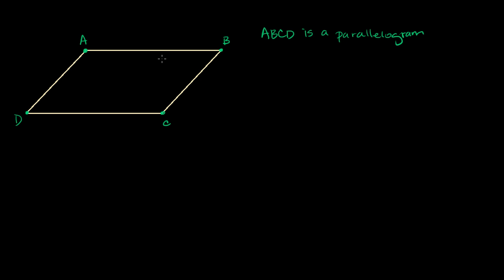We know that quadrilateral ABCD is a parallelogram. What I want to discuss in this video is a general way of finding the area of a parallelogram. In the last video, we talked about a particular way of finding the area of a rhombus — you can take half the product of its diagonals. A rhombus is a parallelogram, but you can't just generally take half the product of the diagonals of any parallelogram. It has to be a rhombus. So now we're going to talk about parallelograms.